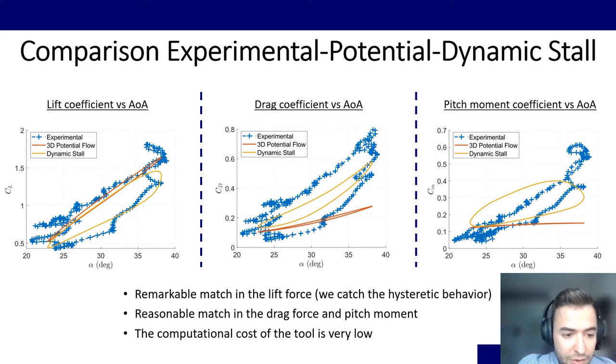So we see that for the CL the match is quite good. For the CD we improved a lot. We still don't catch the whole hysteresis but we improved a lot. And for the pitch moment coefficient we see that the trends at least start being similar. And the most important characteristic of this method, apart from the accuracy, is the low computational cost that it has. It's super low.